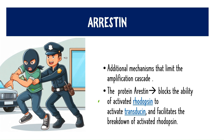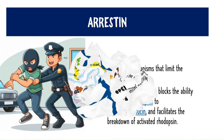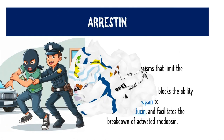Another regulatory protein is arrestin. Arrestin blocks the ability of rhodopsin to activate transducin and facilitates the breakdown of activated rhodopsin — effectively arresting rhodopsin to prevent further transducin activation. Together with guanylate cyclase and calcium channels, arrestin helps regulate and terminate phototransduction.